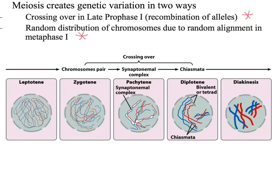This figure we're looking at is crossing over in late prophase I. Late prophase I has been divided into five separate substages: leptotene, zygotene, pachytene, diplotene, and diakinesis.